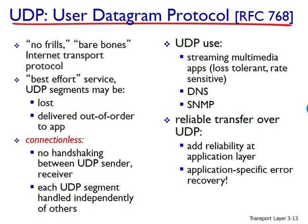Before discussing UDP segment structure, I want to mention that it is possible for an application to have reliable data transfer when using UDP. This can be done if reliability is built into the application itself, allowing processes to communicate reliably without being subjected to the transmission rate constraints imposed by TCP's congestion control mechanism.